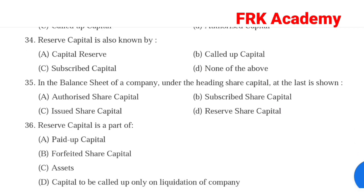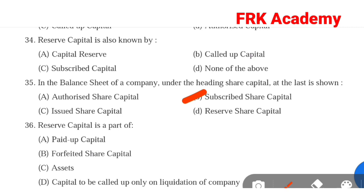Question 35: In the balance sheet of a company under the heading share capital, what is shown last? Option A: authorized share capital. Option B: subscribed share capital. Option C: issued share capital. Option D: reserve share capital. Answer: Option B, subscribed share capital.